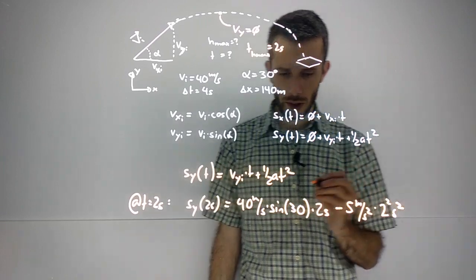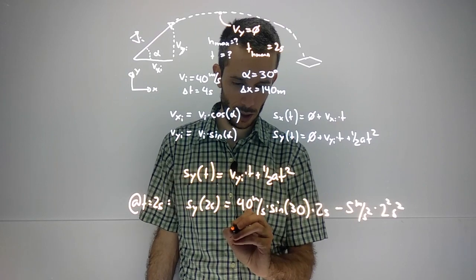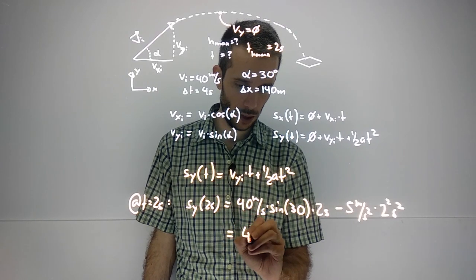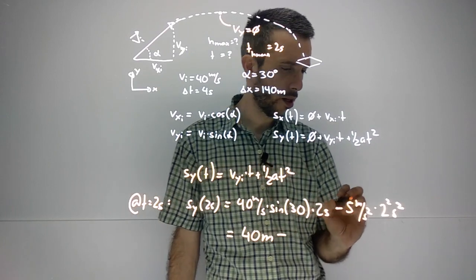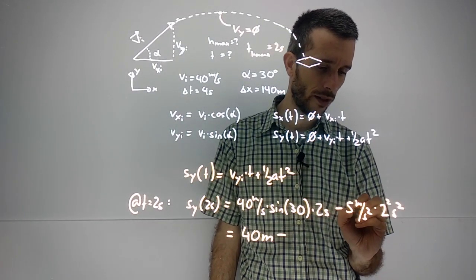And now all we have to do is plug in the numbers. So 40 meters per second times sine of 30 times 2 seconds gives me 40 meters. Minus 5 meters per second squared, the seconds squared cancels the seconds squared,